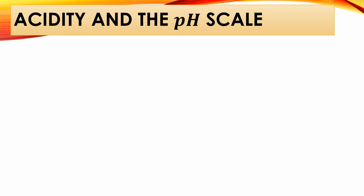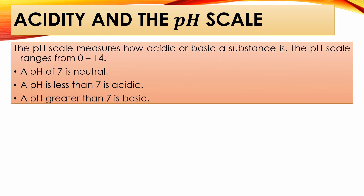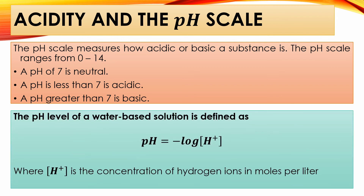How about acidity and the pH scale? The pH scale measures how acidic or basic a substance is. The pH scale ranges from 0 to 14: a pH of 7 is neutral, a pH less than 7 is acidic, and a pH greater than 7 is basic. The pH level of a water-based solution is defined by the formula: pH equals negative log[H+], where [H+] is the concentration of hydrogen ions in moles per liter.